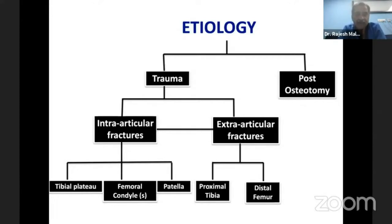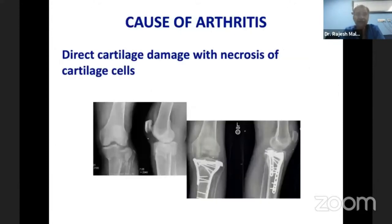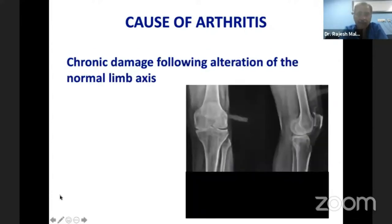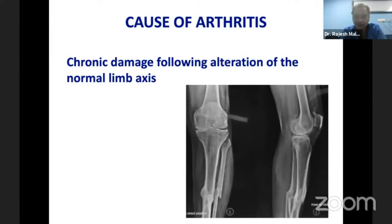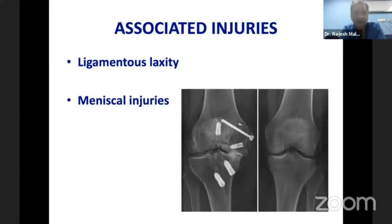The fractures could be intra-articular or extra-articular and could involve all the bones around the knee. The cause of arthritis could be direct cartilage damage with necrosis of the cartilage cells, or it could be due to chronic damage following the alteration of the normal limb axis. This is why we always say to take full-length X-rays — it is not uncommon to miss these fractures on short films. Associated injuries such as ligamentous laxity and meniscal injuries are also common.